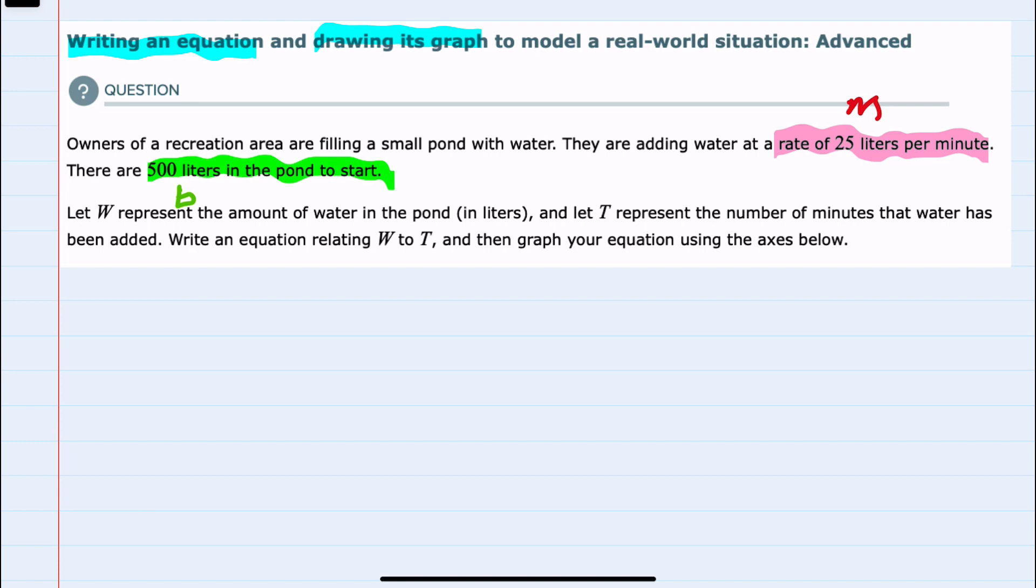So W, the amount of water that's in the pond, will be equal to the slope which is here 25 liters per minute times the number of minutes that it's been filling.